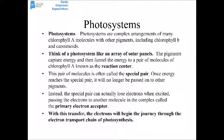Photosystems are arrangements of chlorophyll A molecules and other pigments like chlorophyll B and carotenoids — think of them like arrays of solar panels. These pigments capture energy and funnel it to a pair of chlorophyll A molecules in the middle called the reaction center, sometimes called the special pair. Once energy reaches this special pair, the electrons keep gaining energy until they're expelled — the special pair is said to be oxidized. Those electrons are passed to a molecule called the primary electron acceptor and begin their journey through the electron transport chain (ETC) of photosynthesis.